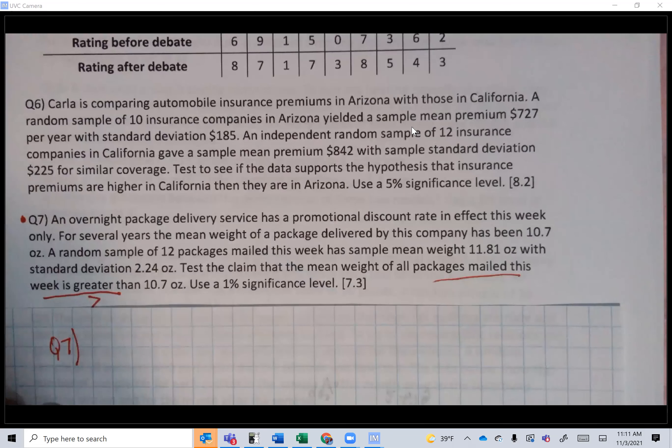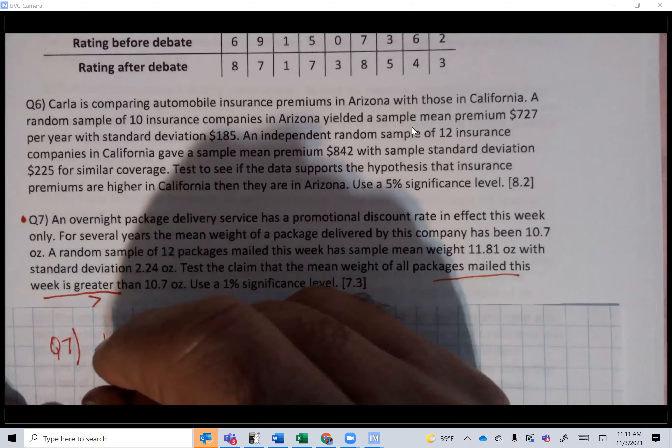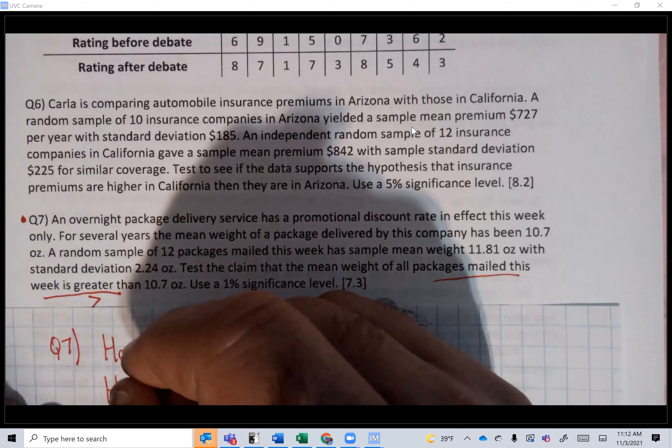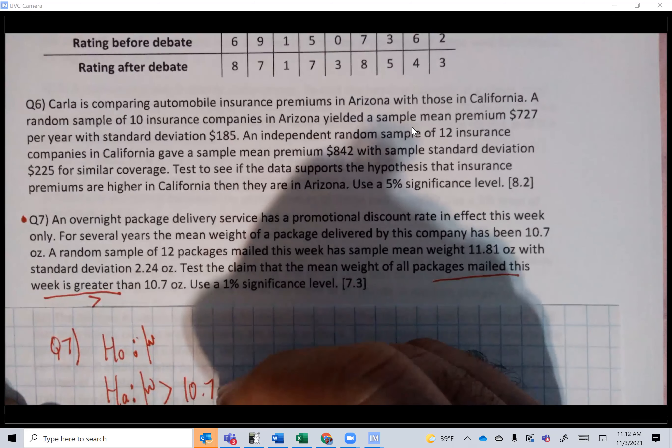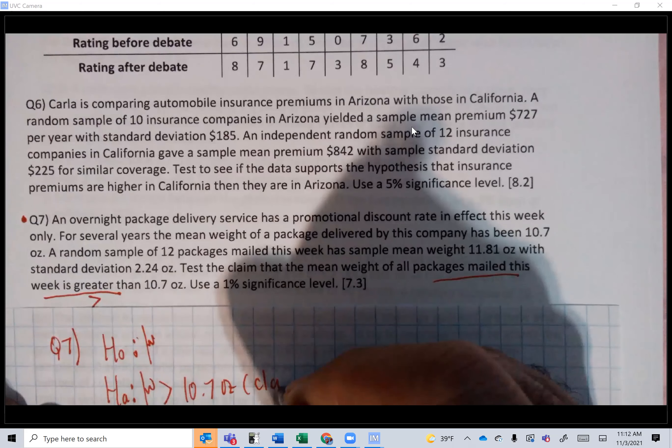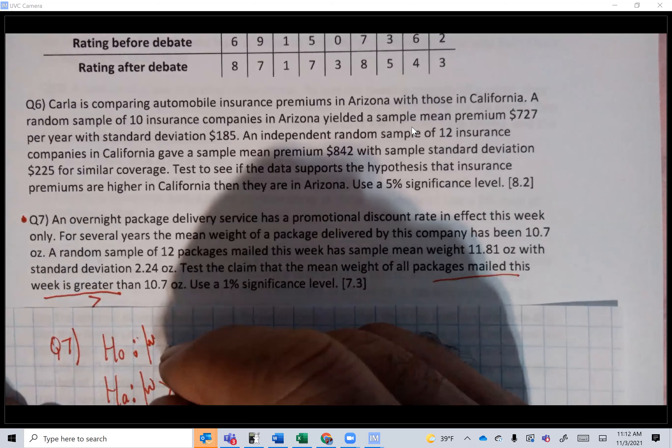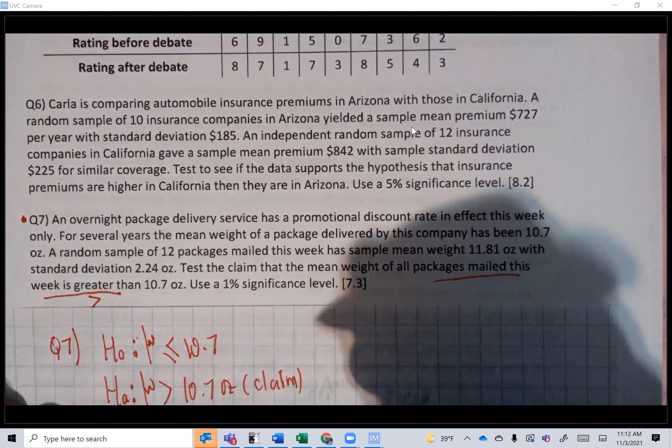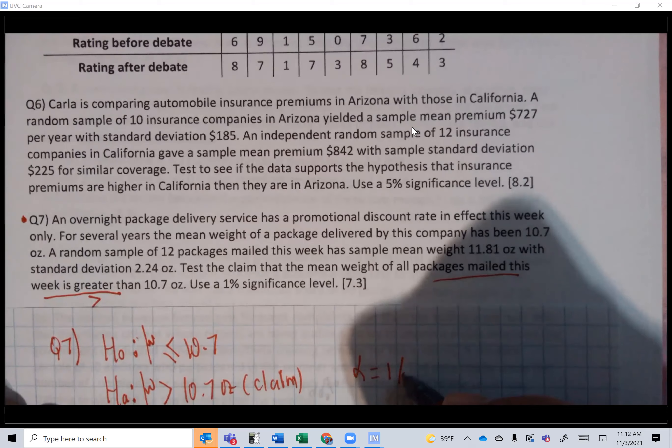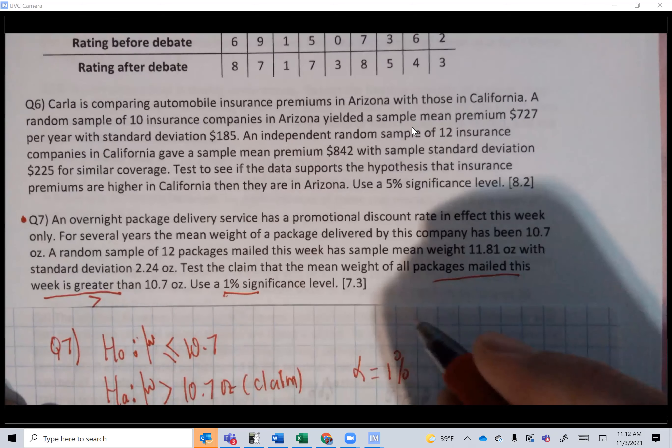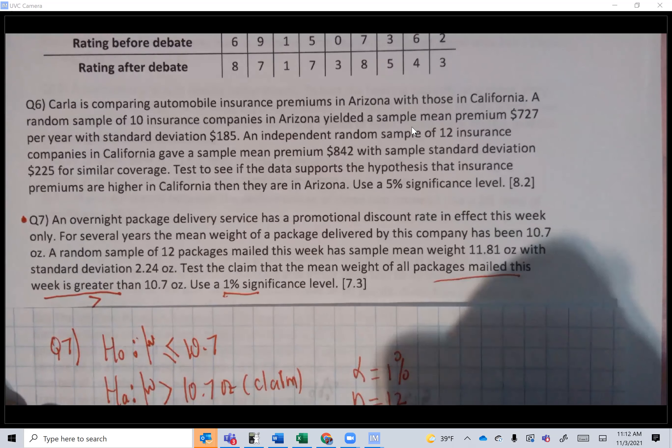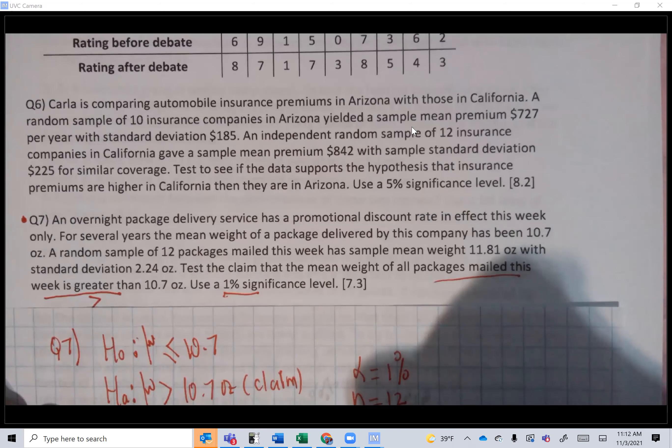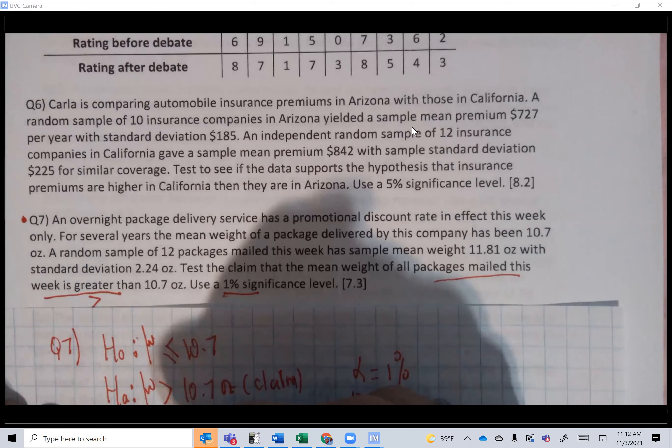Question 7. So H0 and HA. It's a mean, not a proportion. It's talking about standard deviations and sample mean. Greater than 10.7 ounces, so put the claim here. The null hypothesis will be μ ≤ 10.7. Alpha equals 1%, n is 12, x̄ is 11.81, standard deviation s is 2.24. It's a t-test.